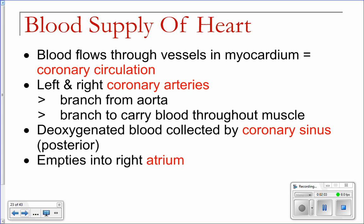So these two coronary arteries — the right and the left — a lot of times if you hear of bypass surgery, you're getting a bypass on one of these arteries. You can have a double or quadruple bypass. What basically happens is one of these gets blocked, that part of the heart is not getting blood, so you have to bypass it and make sure that it's getting blood properly.